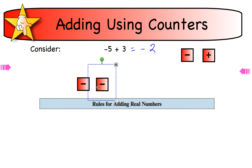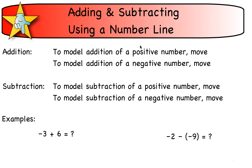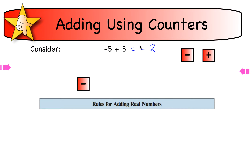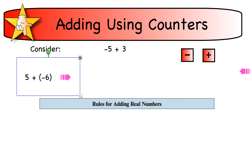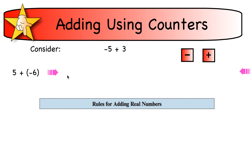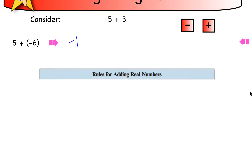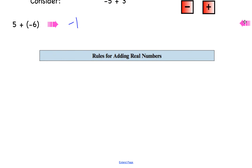You can always draw that out on your paper. Here's another example: five plus a negative six. Draw five pluses and six negatives, cancel the pairs, and you get a negative one left over. Here's one more for you to practice — you should get negative four.